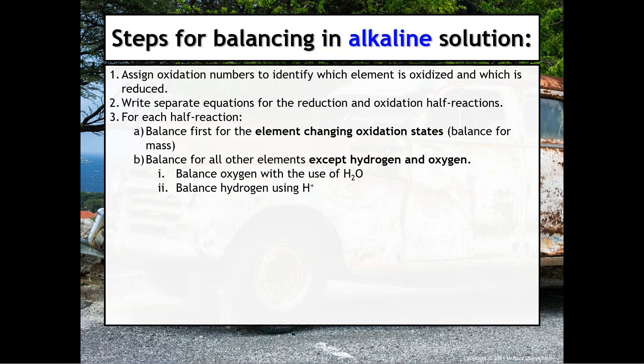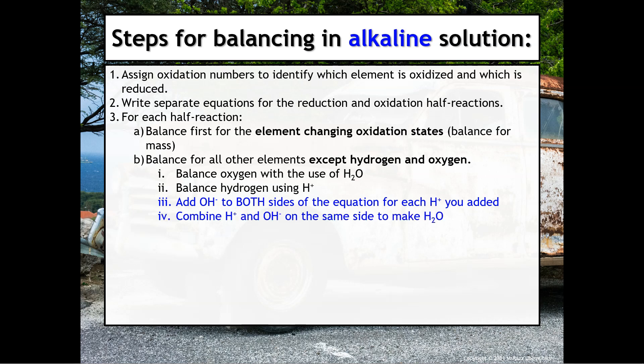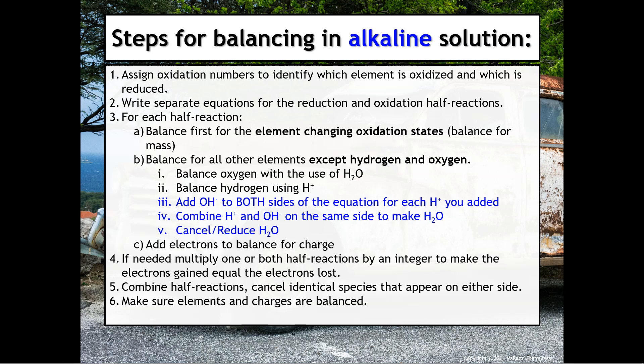The process for balancing in alkaline solution is virtually identical to acidic solution. The only difference is that in alkaline solution, you don't have H+ floating around — you have OH- instead. Every step is identical, except when balancing for oxygen with water and hydrogen with H+. Because it's a basic solution with lots of OH- around, for every H+ you add, you must add the same number of OH- to both sides of the equation. You then combine H+ and OH- on the same side to make water and cancel or reduce the H2O's.